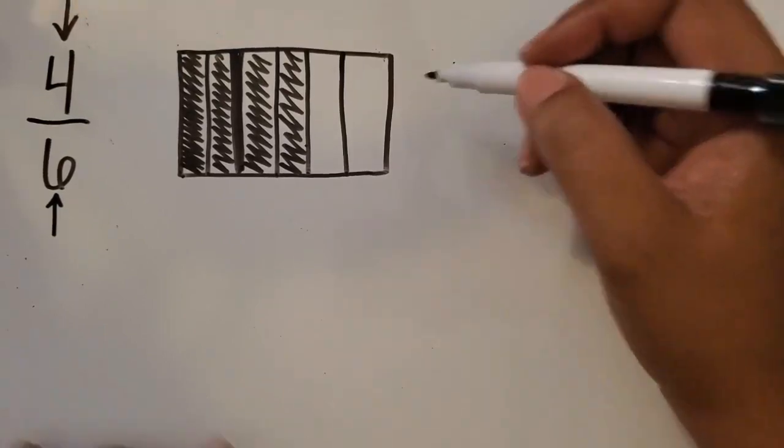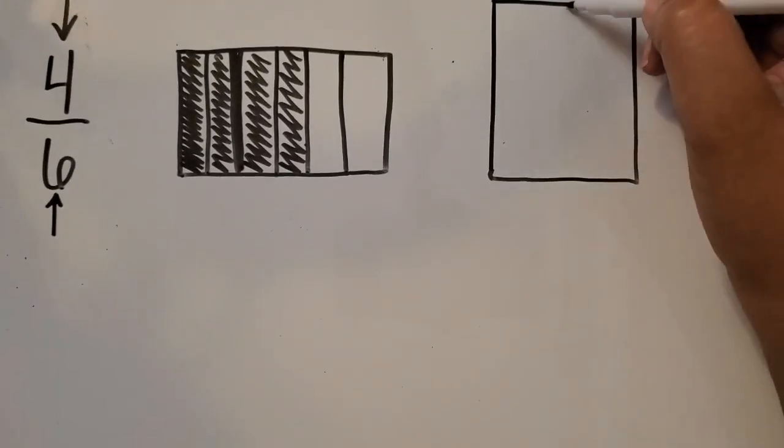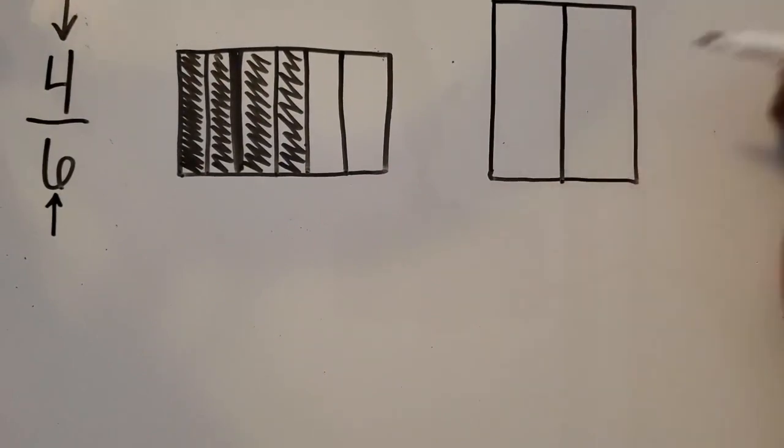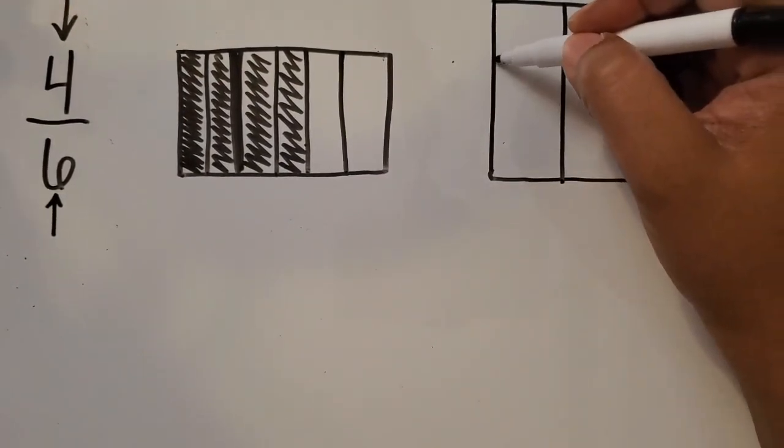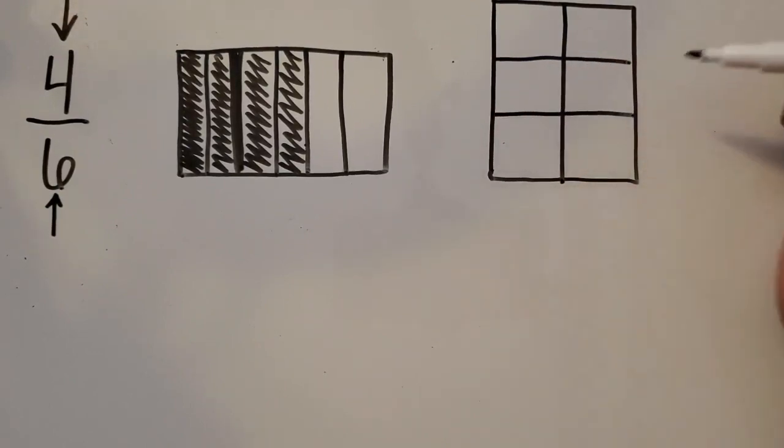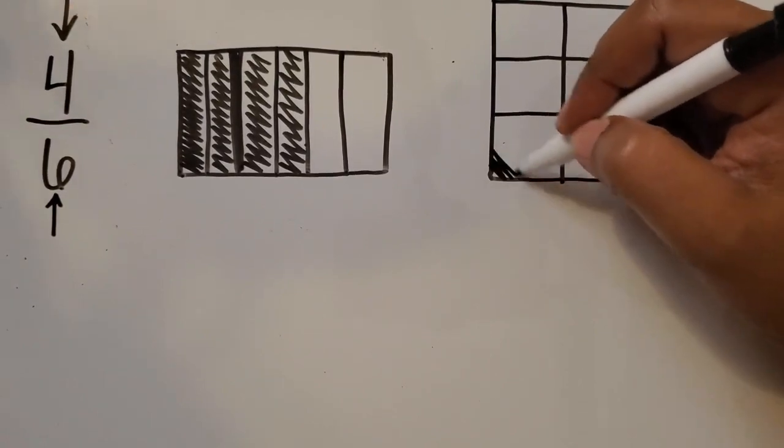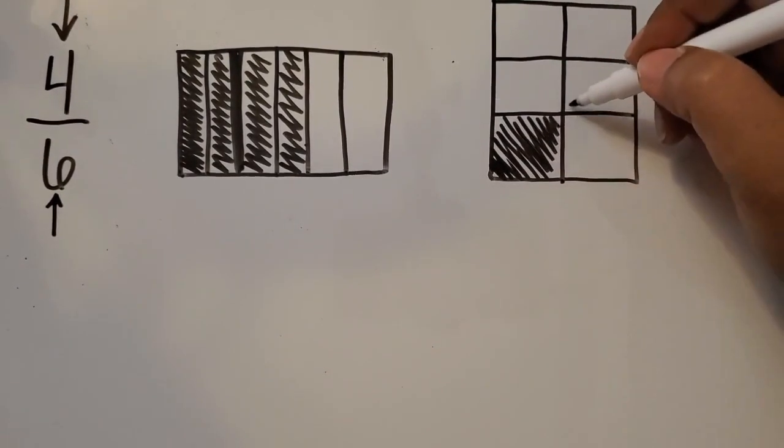Let's look at another model we can use to represent 4/6. Using a different size whole, I can partition my whole in half and then into thirds. So from these 6 equal parts, again, I need to shade in 4 to represent the fraction 4/6.